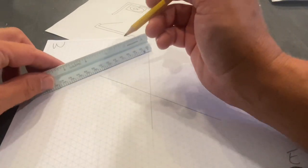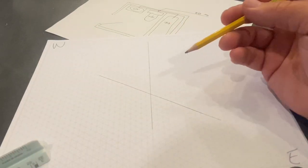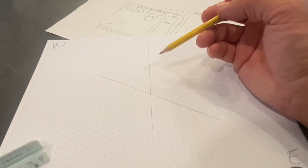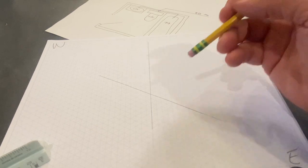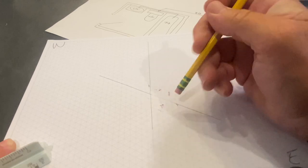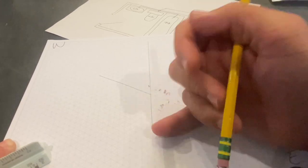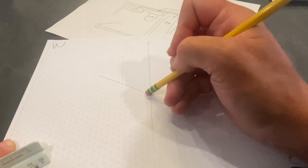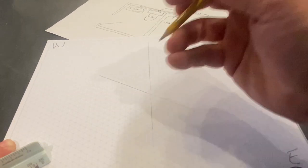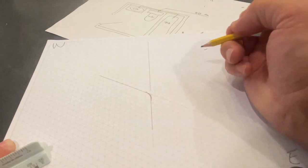So first thing we're gonna do is we're going to take our architect's ruler and let's make a line, just like that. Picture this line as being that wall. Picture that line as being that wall. And we know that the furthest fixture is going to be our laboratory.